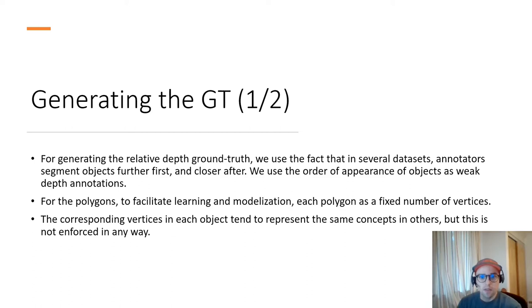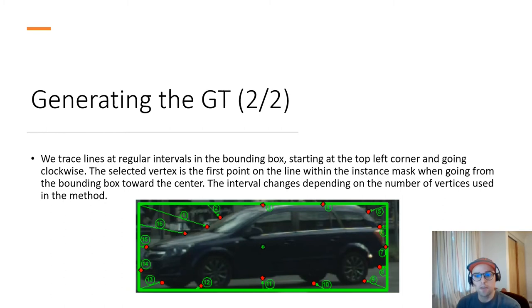So for the polygons, to facilitate learning and modernization, each polygon has a fixed number of vertices. And we try to create our ground truth so that the corresponding vertices in each object tend to represent the same concept in others. This is not enforced, but it tends to be this way.